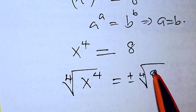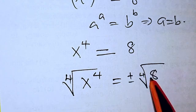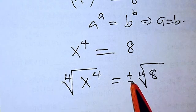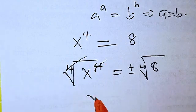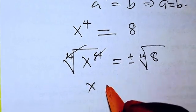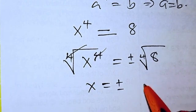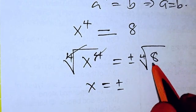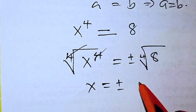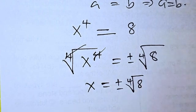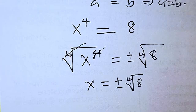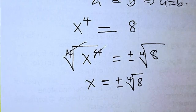Therefore, you have x = ±⁴√8. That is the end of the solution, and this is where we are going to stop.